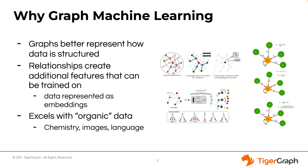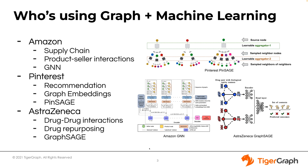One of the areas where graph machine learning really excels is with organic types of data — things like molecules, proteins, and language — structures that naturally flow and fit into each other and can't easily be represented by rows and columns. So let's talk a little bit about how graph machine learning is used in the real world, who's using it, and what some of those use cases are.